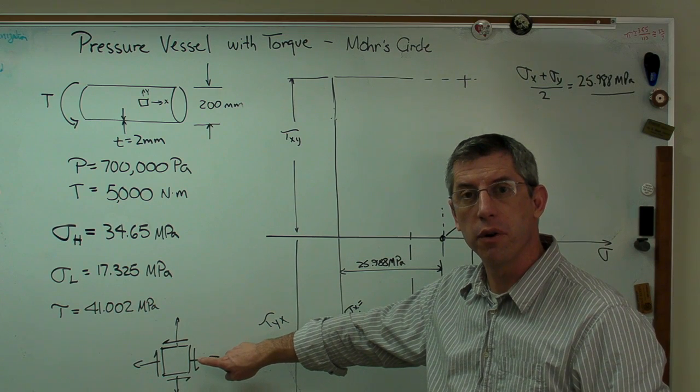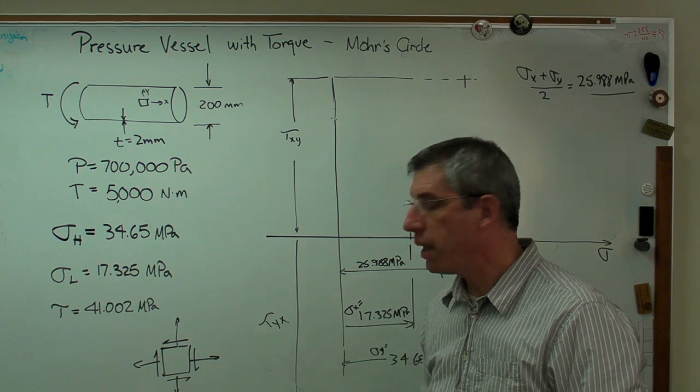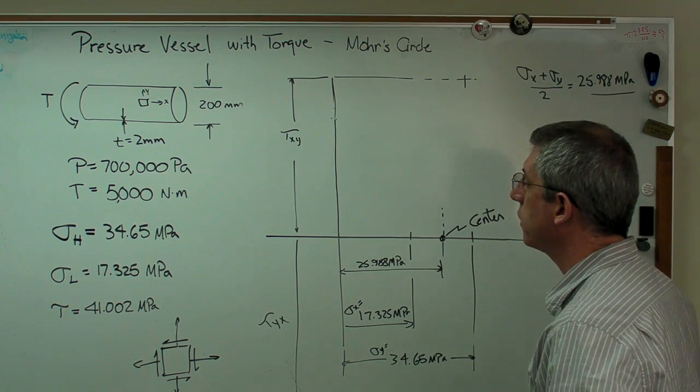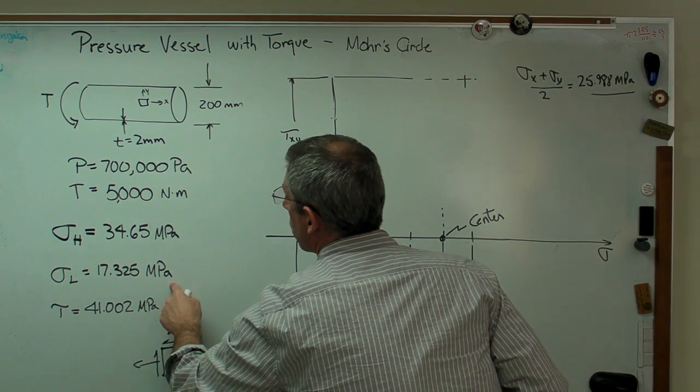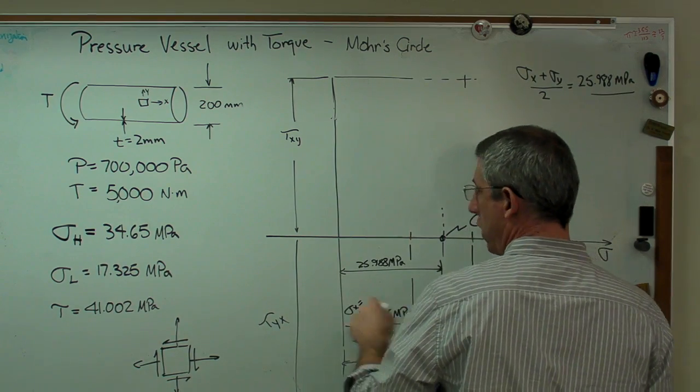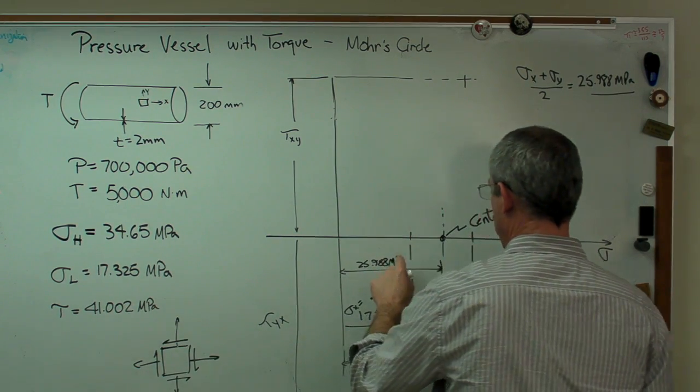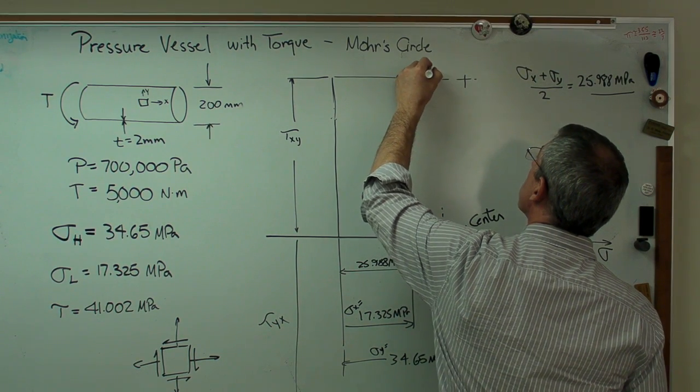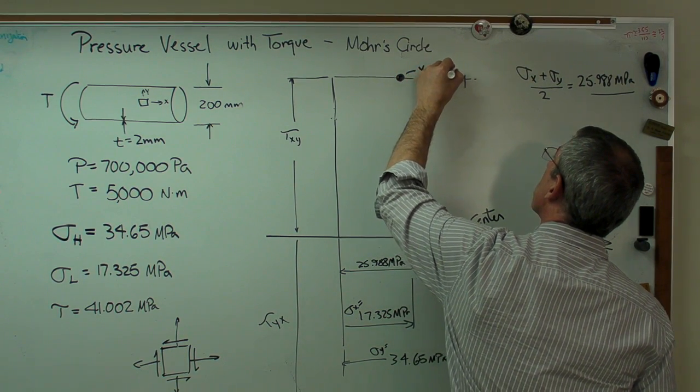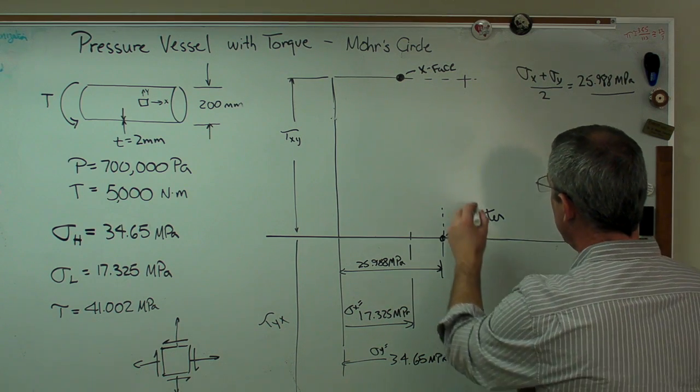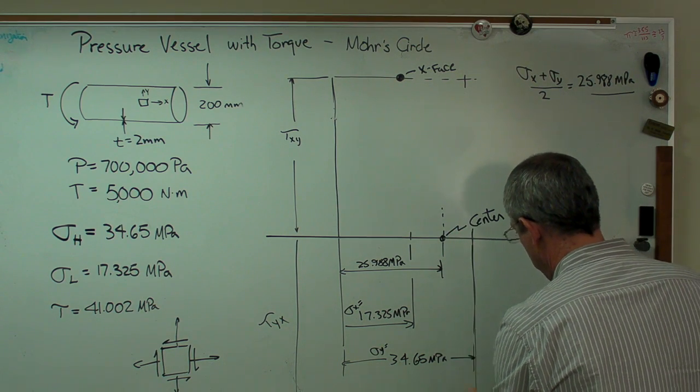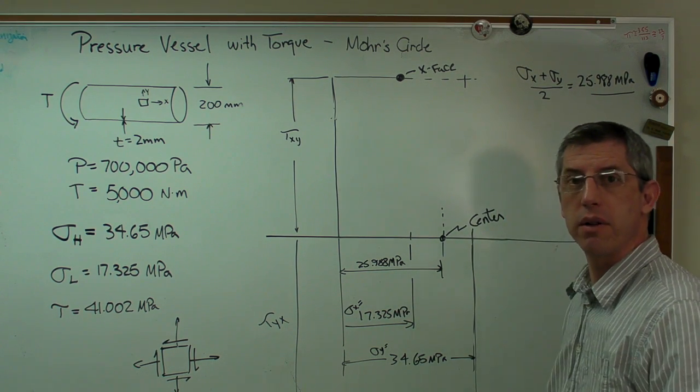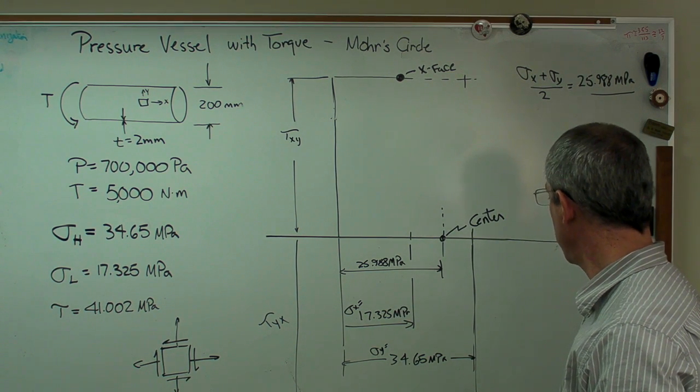I want to draw the first point to be representing the x-face. So that's going to be this normal stress and that shear stress. Well, that normal stress right there and that shear stress cross right there. So that's the x-face. And the y-face is way down here. It's this, there's sigma y, and there's tau yx. So next thing I need to do is draw the radius.